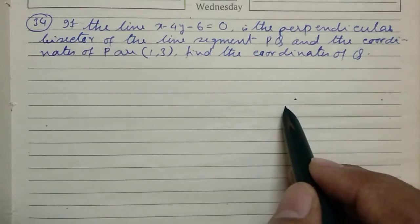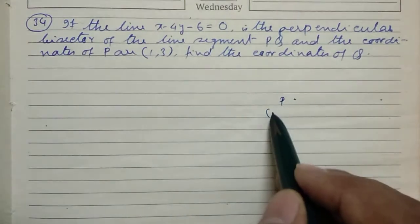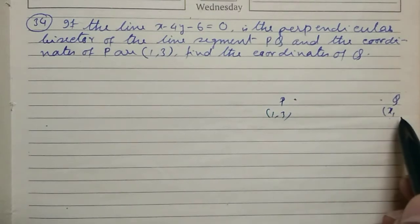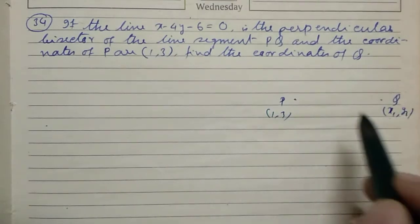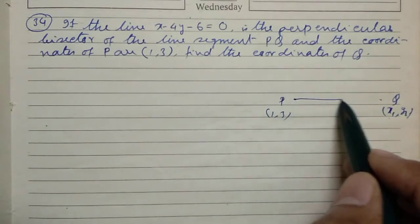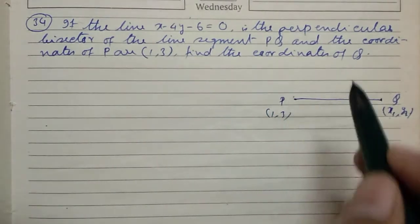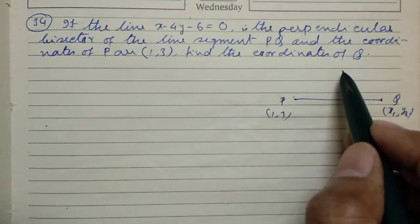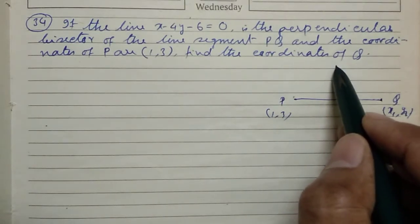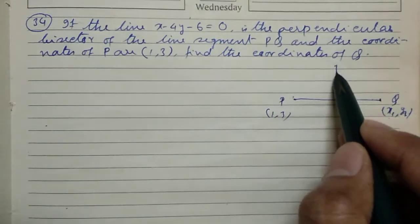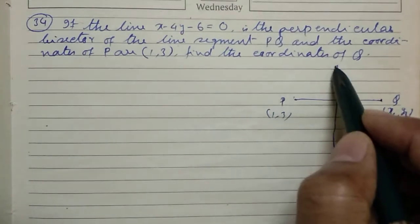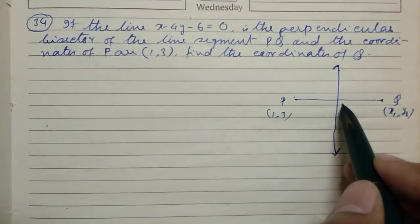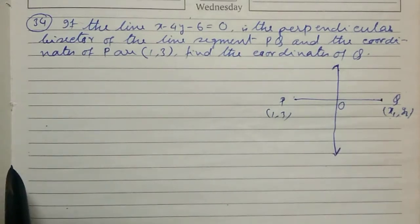We first draw the picture. P at (1, 3), Q at (x1, y1), and this is the line segment. This line is the perpendicular bisector of this line segment. Let O be the foot of the perpendicular.